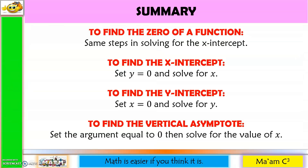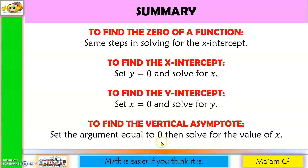Here is a summary of what we discussed: Finding the zero is the same as finding the x-intercept — set y equal to zero and solve for x. To solve for the y-intercept, set x equal to zero and solve for y. To find the vertical asymptote, equate the argument equal to zero and solve for x.